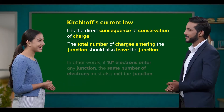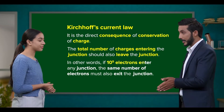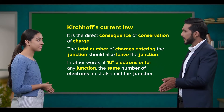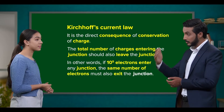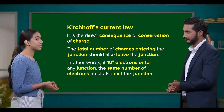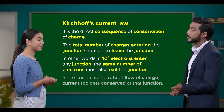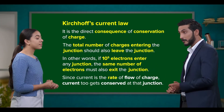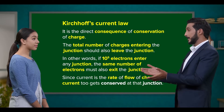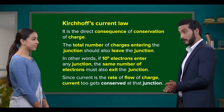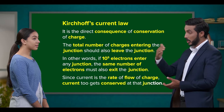For instance, if 10 to the power of 5 electrons enter any junction, the same number of electrons must also exit the junction. Since current is just the rate of flow of charge, as stated by Kirchhoff's first law, current gets conserved at that junction.